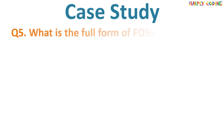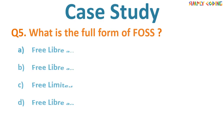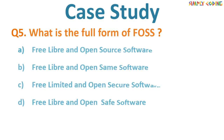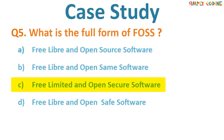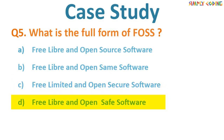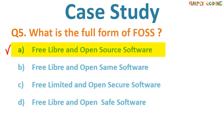What is the full form of FLOSS? Options: A) Free Libre and Open Source Software. B) Free Libre and Open Same Software. C) Free Limited and Open Secure Software. D) Free Libre and Open Safe Software. The correct answer is A — Free Libre and Open Source Software.